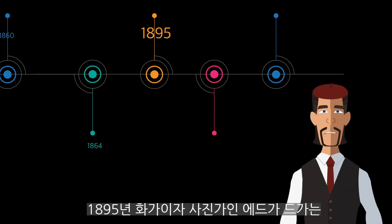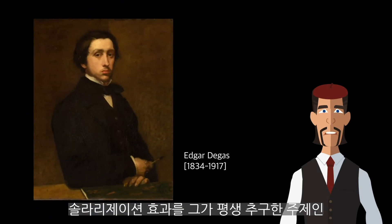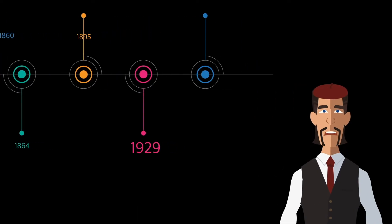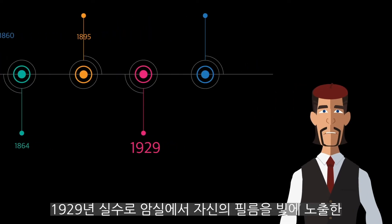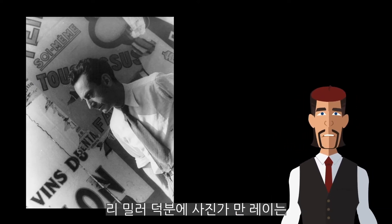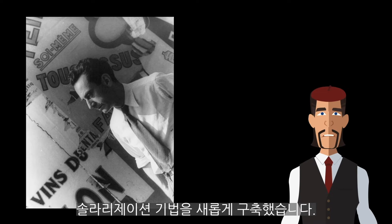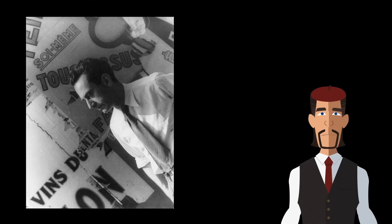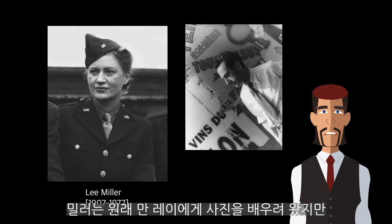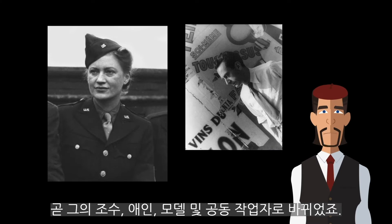In 1895, the artist and photographer Edgar Degas tried an early artistic experiment with the effect. In 1929, the artist Man Ray perfected the technique, which was accidentally discovered in the darkroom because Lee Miller accidentally exposed his film. Miller had come to him initially as a student, but was soon his assistant, lover, model, and collaborator in his photography.